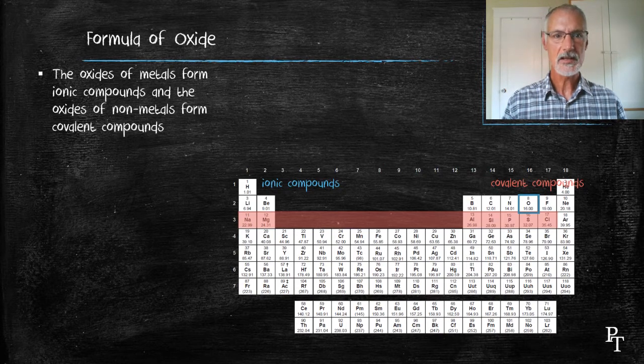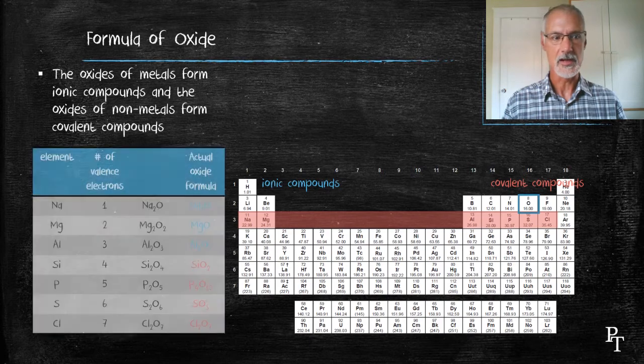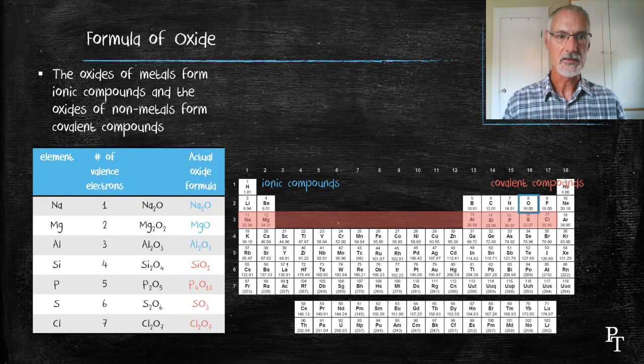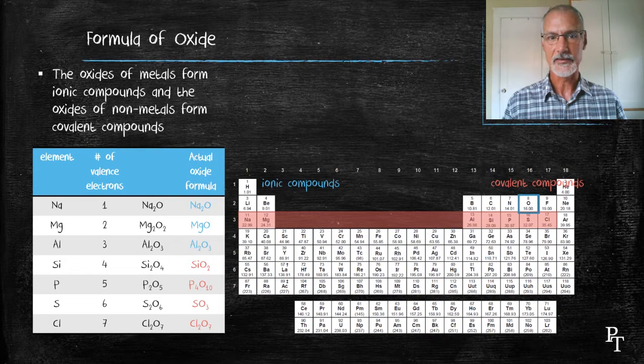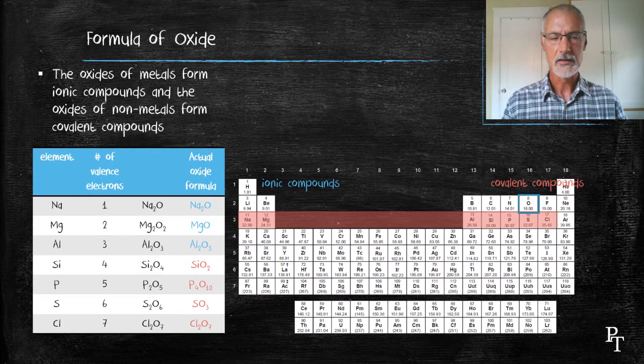Now, let's take a look at the formulas that result from these combinations. In this table, I have the element on the left-hand side, and the actual formula of the oxide on the right-hand side. At first glance, there doesn't appear to be much of a pattern to their particular formulas, but let's look a little bit more closely.